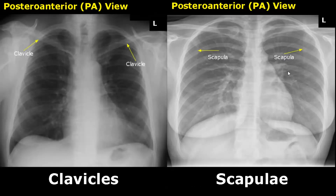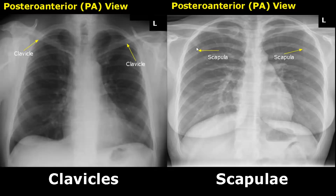The clavicles, also known as collar bones, will be superimposed over the lung apices. The scapulae are seen behind the ribs and they are triangular shaped bones.